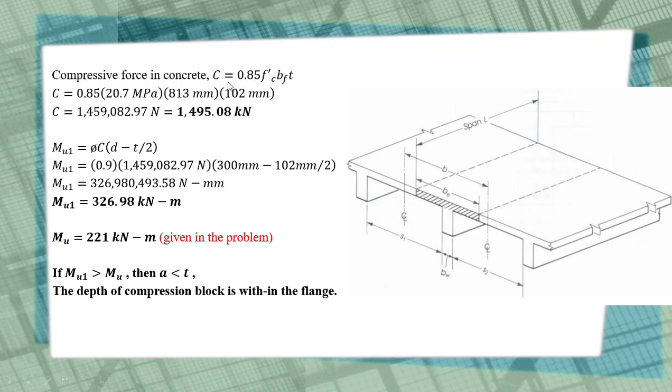So C is equals to 0.85 f'c, which is 20.7, then bf the width of the flange 813 mm, times the thickness of the slab which is 102 mm. We get C is equals to 1,495,080 newtons or about 1,495.08 kilonewtons.